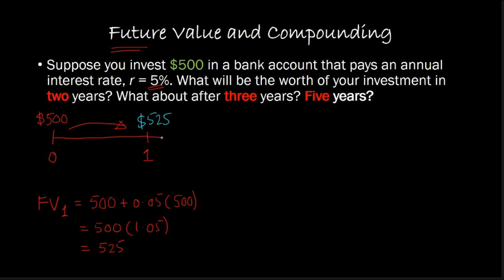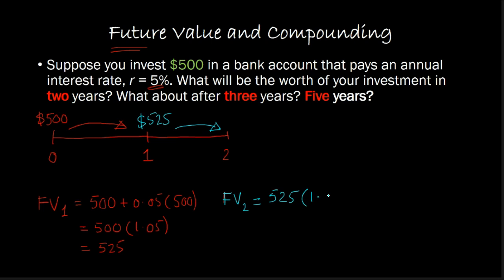To find the two-year value, we extend our timeline out two years. By the end of one year you have $525, so the future value two years out is simply $525 × 1.05. But notice that this can be written differently: since $525 is actually $500 × 1.05, we can rewrite this as $500 × 1.05 × 1.05, which comes out to $500 × 1.05², equal to $551.25. That is the future value of our $500 two years into the future.